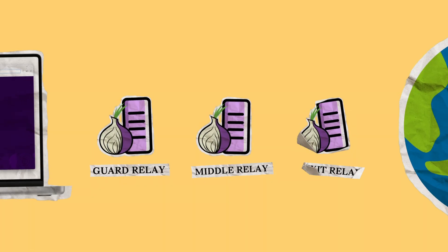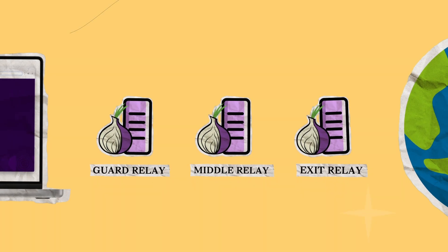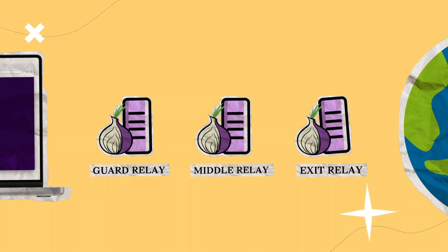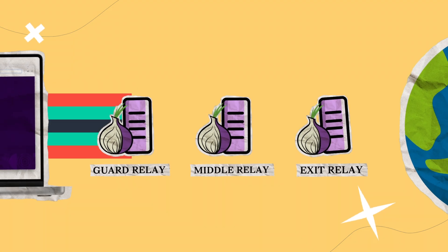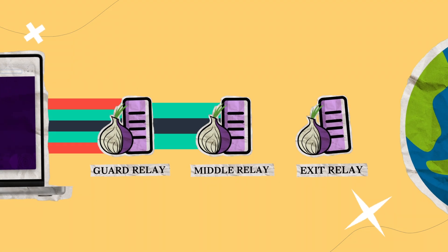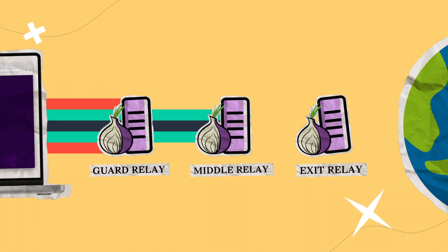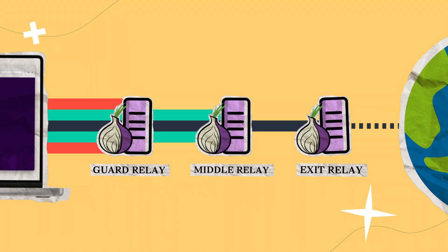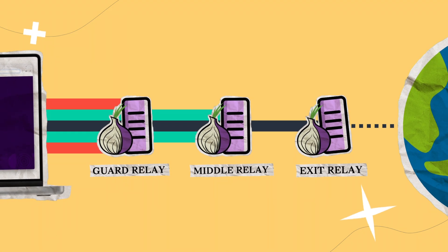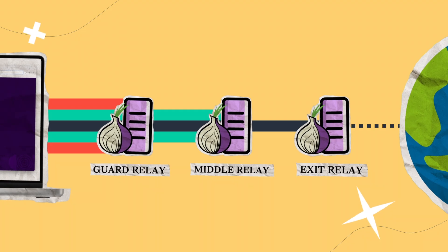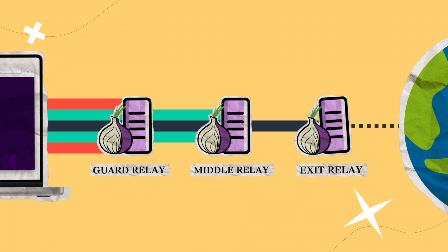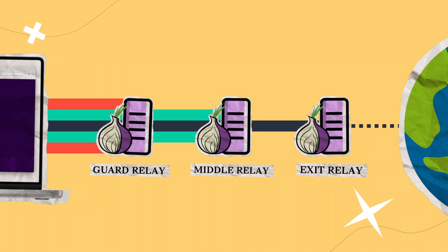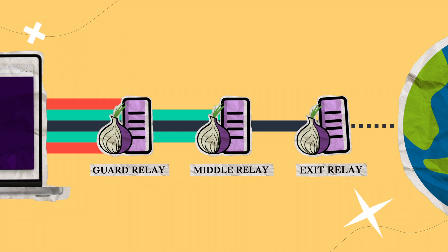Tor uses three layers of encryption to protect the data when it's in transit throughout the circuit. Each relay that the data passes through, a layer of encryption is added. This layering means that a single relay doesn't have visibility into the entire path of your connection.